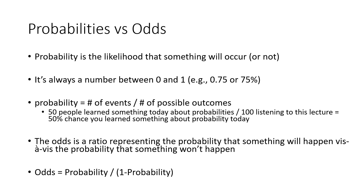For example, let's say that there are a hundred people listening to this lecture and 50 people learn something today about probabilities. To calculate the probability of learning something, you simply take 50 divided by 100 and get a 50% chance. Obviously I hope the actual percentage is significantly higher, including 100%, but it's just for illustrative purposes.